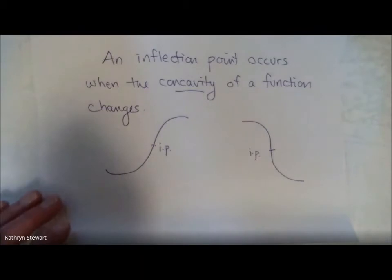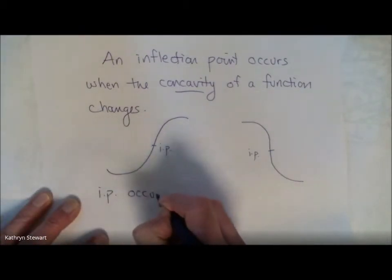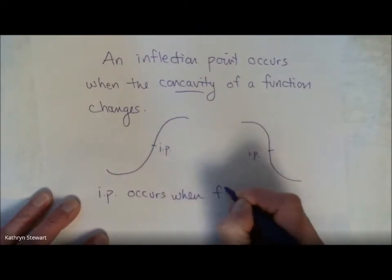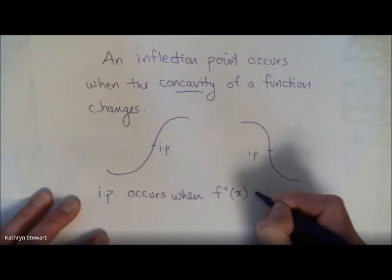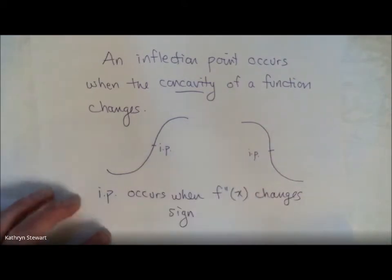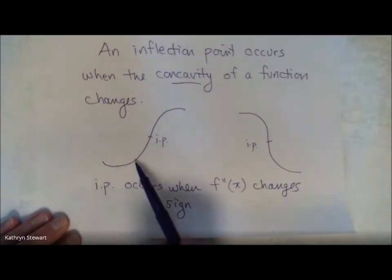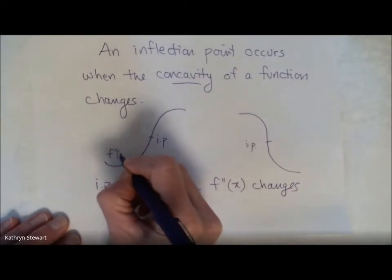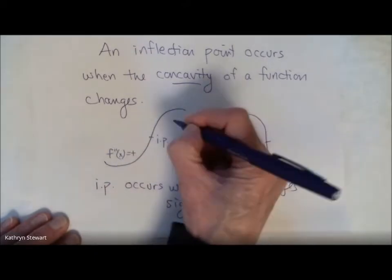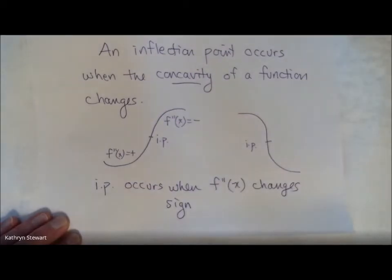So an inflection point occurs when the second derivative of a function changes at that inflection point. It's really that straightforward. An inflection point here happens because we're going from a positive second derivative to a negative second derivative.